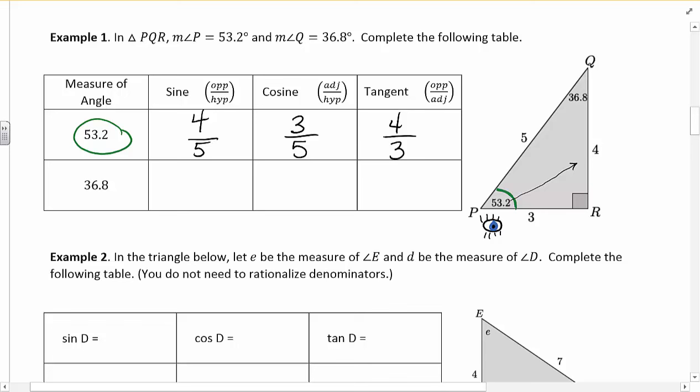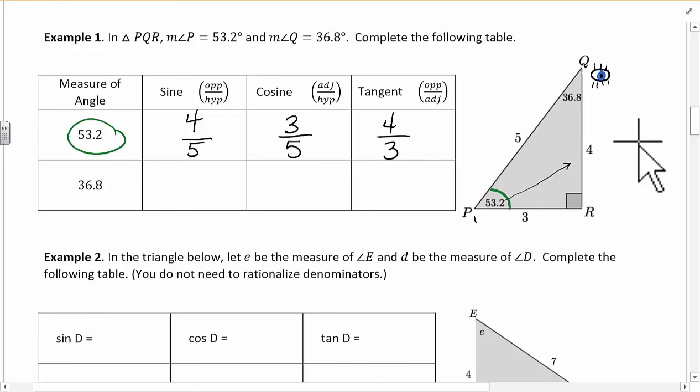Now we're going to change our perspective. And I'm going to take my eyeball here and I'm going to move it up there. And say now my perspective is going to be from the 36.8. So if I go from here, and I'm using my eyeball, now all of a sudden, this is the opposite side. This is the adjacent side. And this is, as it was, the hypotenuse.